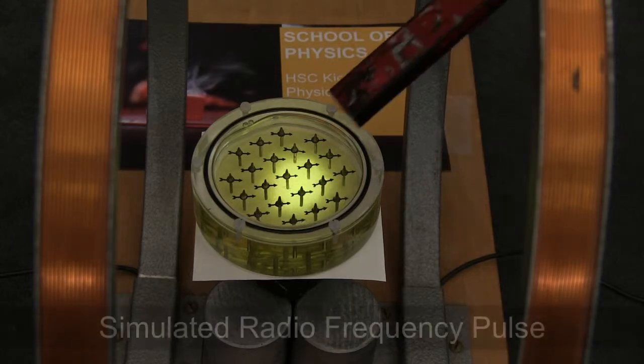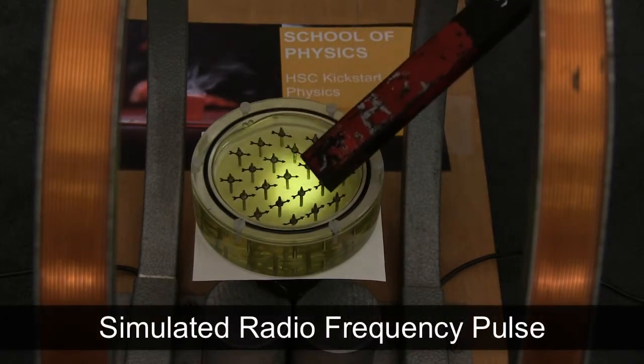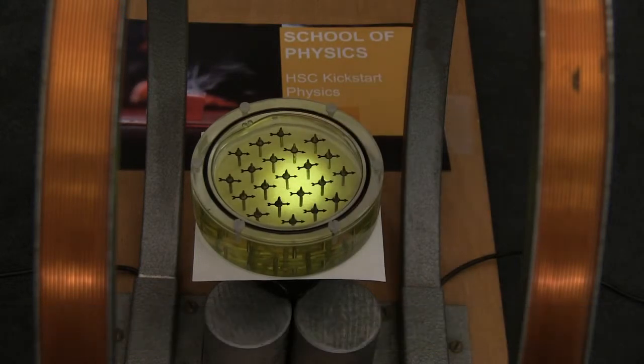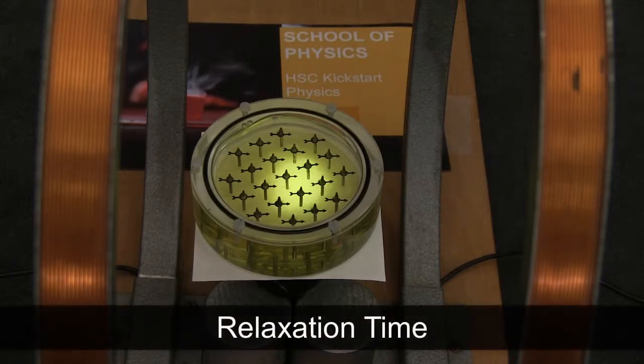Now I'm going to introduce a radio frequency pulse and you can see the spins will react to that. Once I switch off the radio frequency pulse, the spins will go back to their original position, realigned with the Helmholtz coil of the NMR machine. The time it takes for them to go back to the original alignment is called relaxation time.